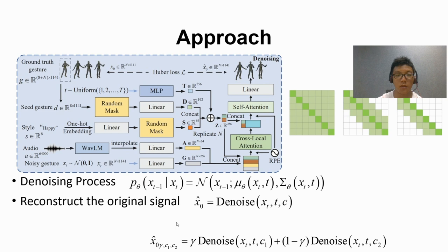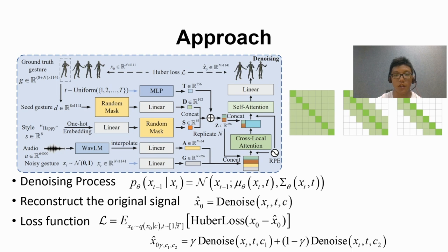The denoising module reconstructs the original signal X0 based on the input denoised XT, denoising step T, and condition C. Then the denoising module can be trained by optimizing the Huber loss between the generated pose X hat 0 and the ground truth human gestures X0 on the training examples.